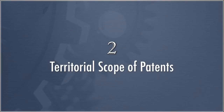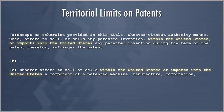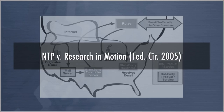Next, let's consider the territorial scope of patent rights. In general, either you infringe in the United States or you don't, but there are important wrinkles. The NTP v. RIM case involves one of those interesting wrinkles. Any infringing activity — make, use, sell, offer to sell, or import into the United States any patented invention — can give rise to liability for infringement of a United States patent. NTP is a different kind of case because it's not so simple.